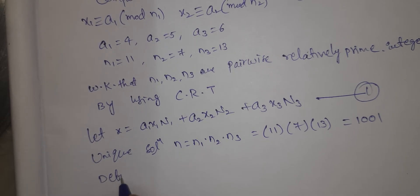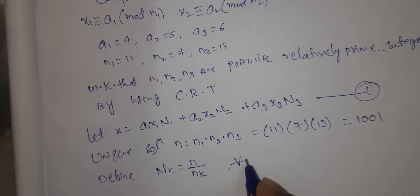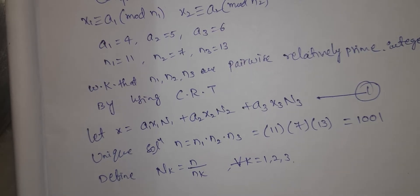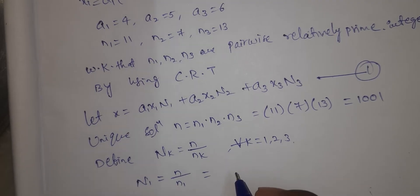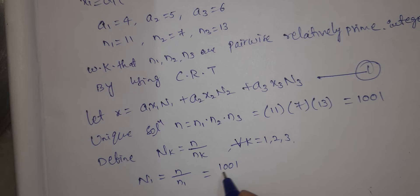Define Nk = N / nk for all k = 1, 2, 3. So N1 = N / n1 = 1001 / 11 = 91. N2 = N / n2 = 1001 / 7 = 143. N3 = N / n3 = 1001 / 13 = 77.